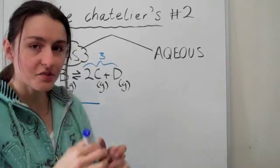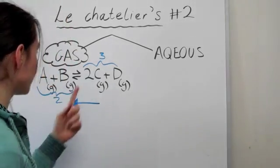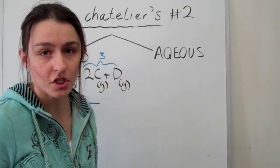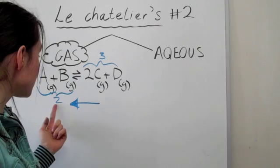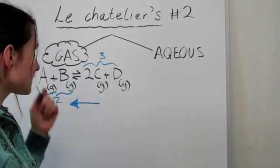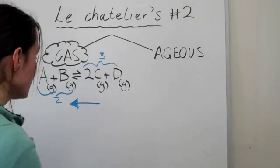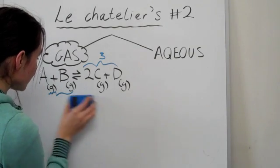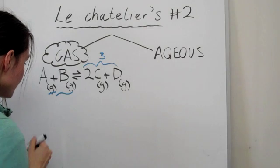because we kind of want to spread out those particles back again. So if there was two and two, then there would be no change in your shift. But since there's two here on this side, then you go backwards. So that's what happens when you increase the pressure.